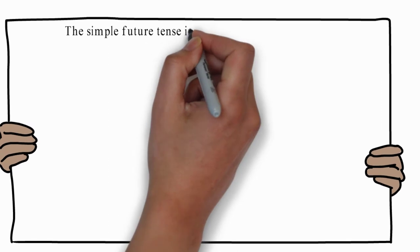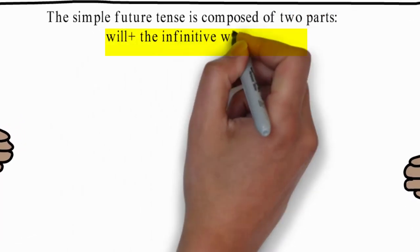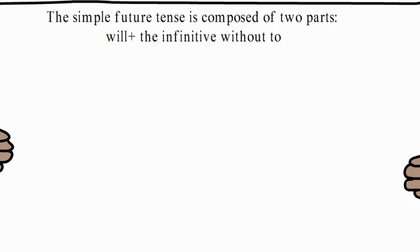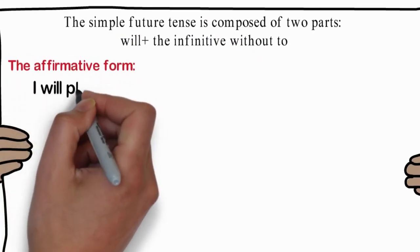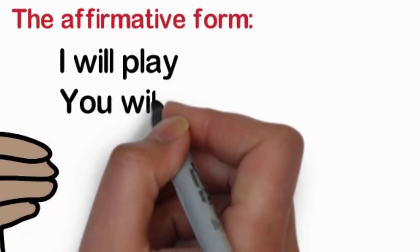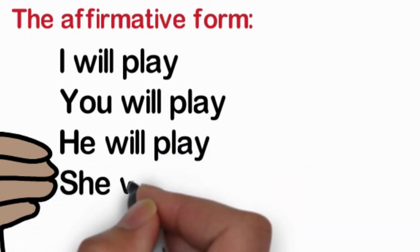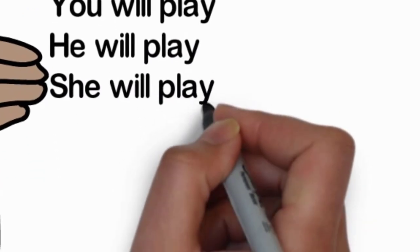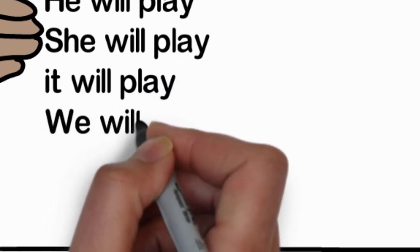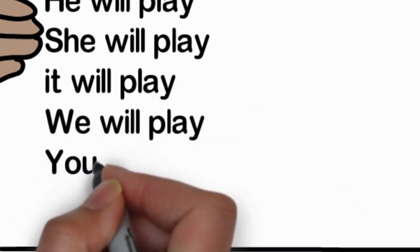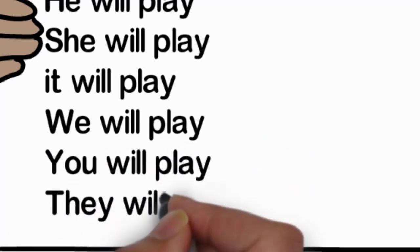The simple future tense is composed of two parts: will plus the infinitive without to. Let's have a look at the affirmative form. I will play, you will play, he will play, she will play, it will play, we will play, you will play, they will play.